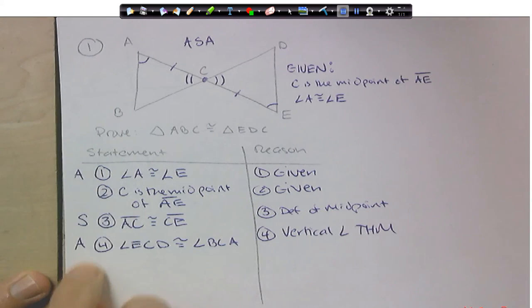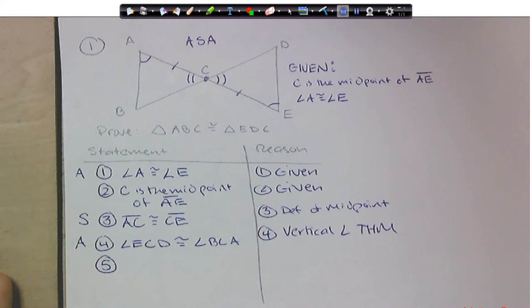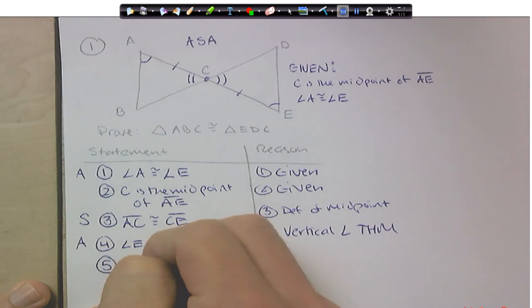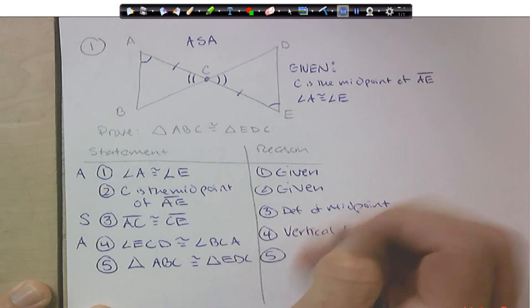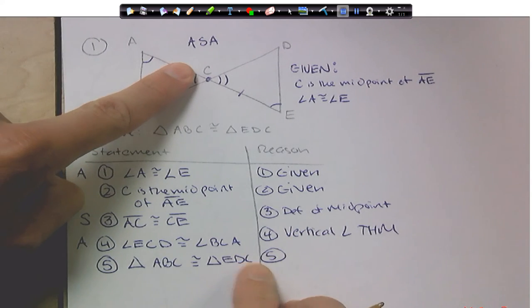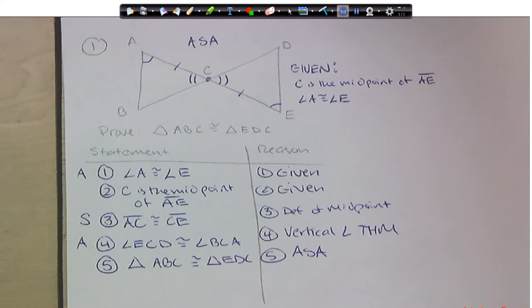So I've proven my ASA. So my last step, step five. My last step would here be to just say the triangle proof. And the reason was we set up the top angle-side-angle. Okay? And there we go. That's the full proof. All right, let's take a look at a couple more problems.